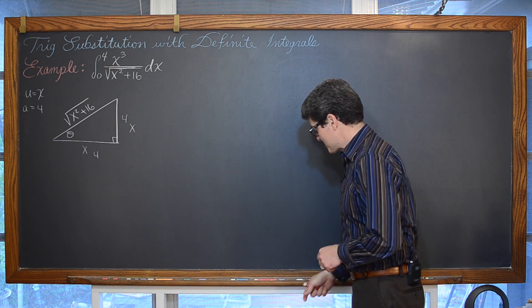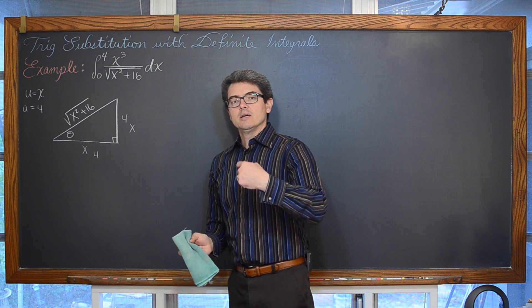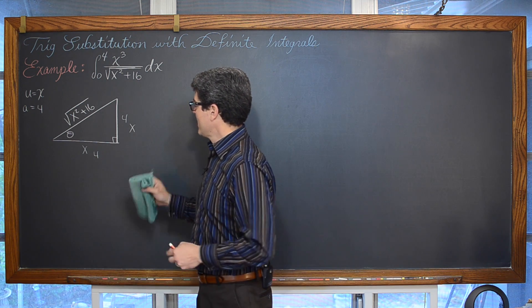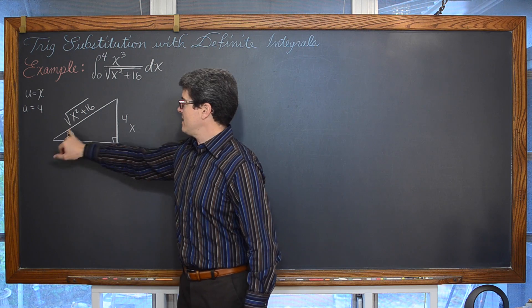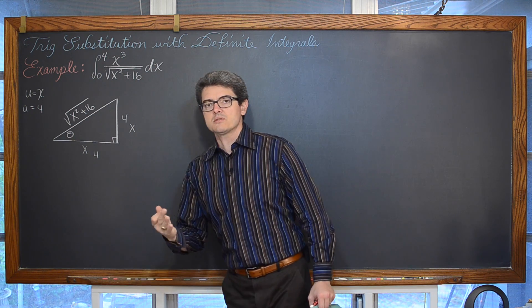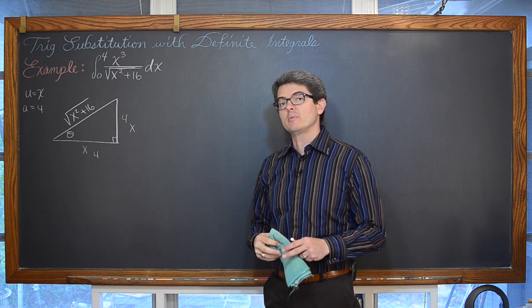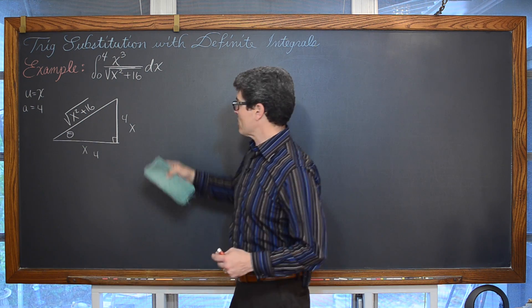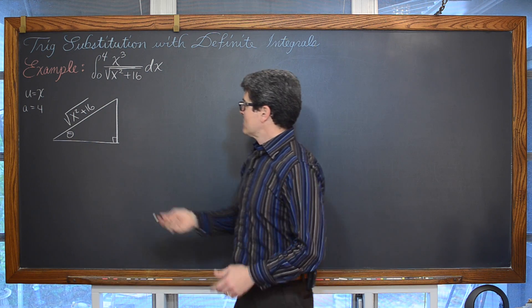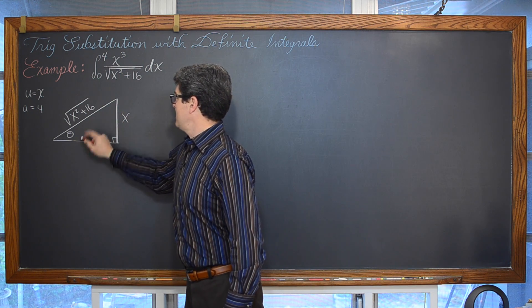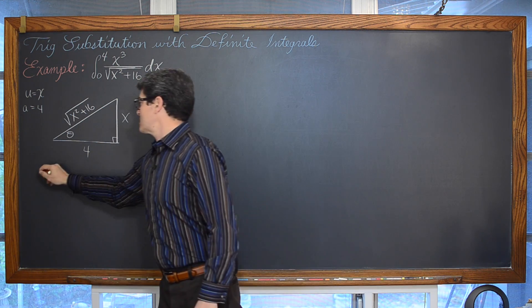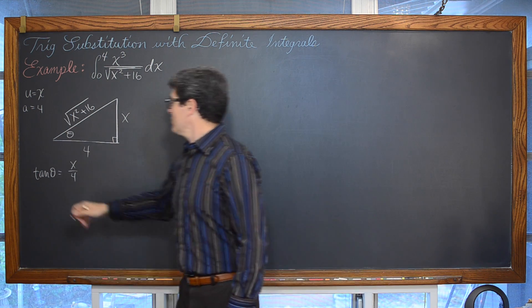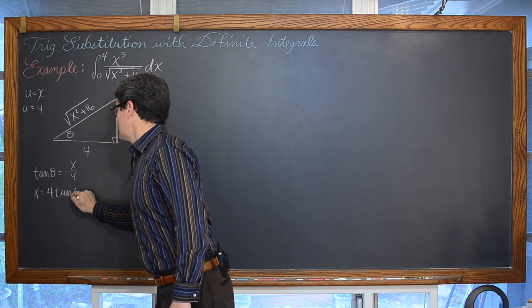When you start setting up your trig substitution, you want to set up one of your primary trig functions — sine, tangent, or secant. You don't want to set up one of the co-functions like cosine, cotangent, or cosecant. If we put x down here, the tangent of theta would equal 4 over x — but we want that denominator to be the constant, and we don't want to work with co-functions. So we are going to let x be the opposite leg, 4 be the adjacent leg, and we have tangent of θ = x/4. Multiplying both sides by 4: x = 4 tan θ.